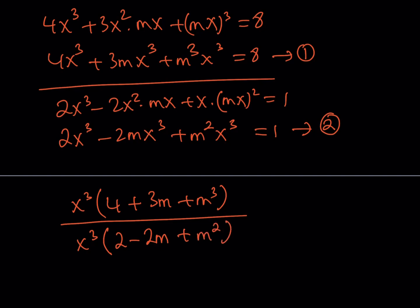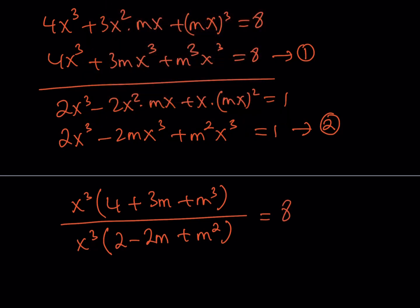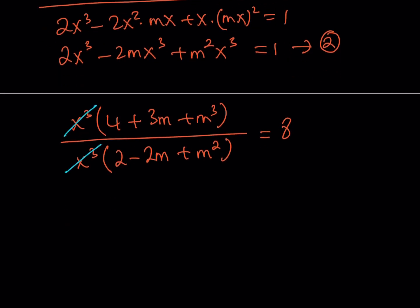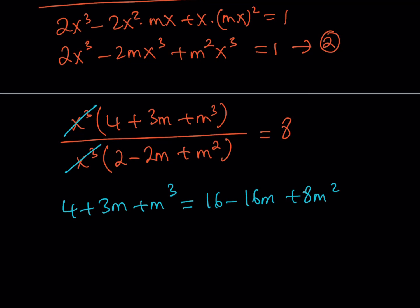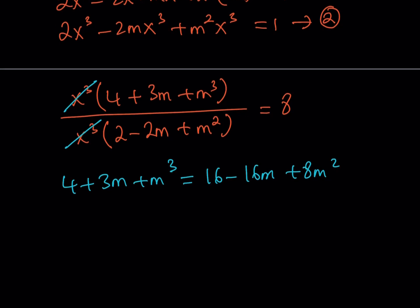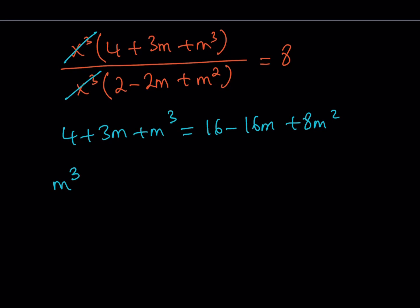Putting everything on the same side to solve this as a cubic in m — notice x disappears and we end up with m. We get m cubed minus 8m squared plus 19m minus 12 equals 0. Now, with this equation, if the roots are rational we can test candidates. For example, numbers that divide 12: 1, 2, 3, 4, 6 are all options.